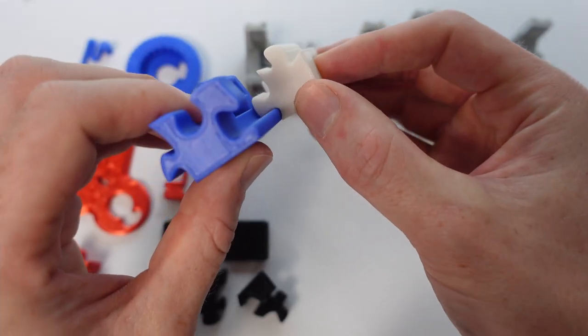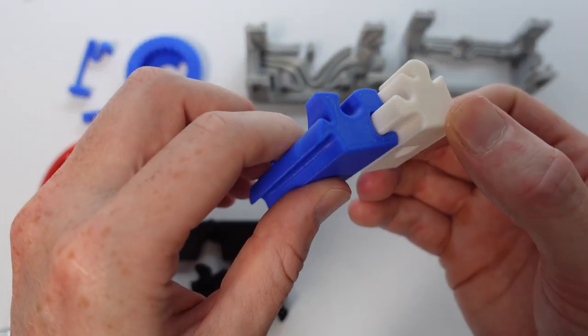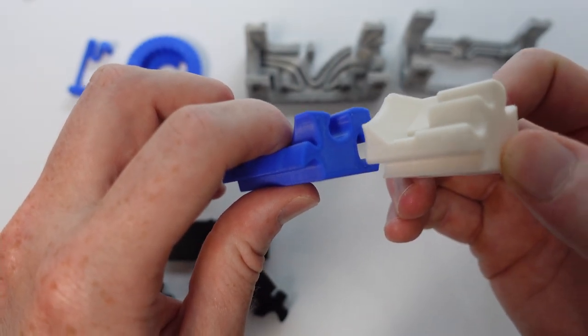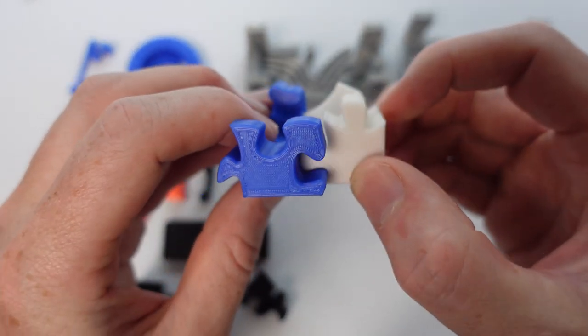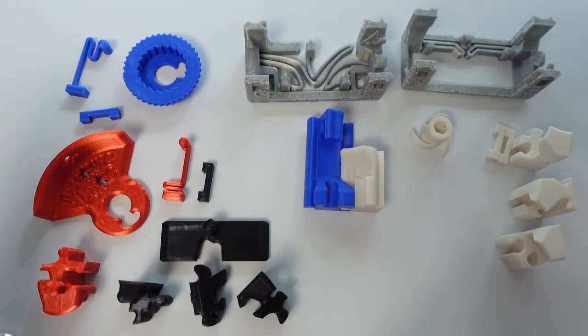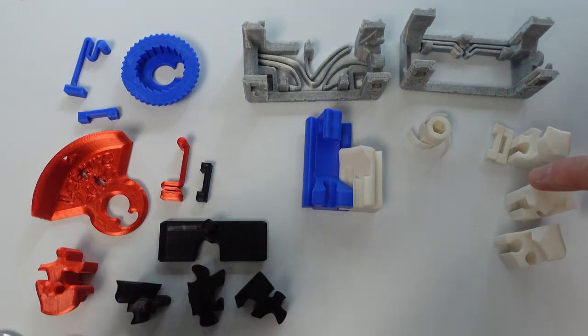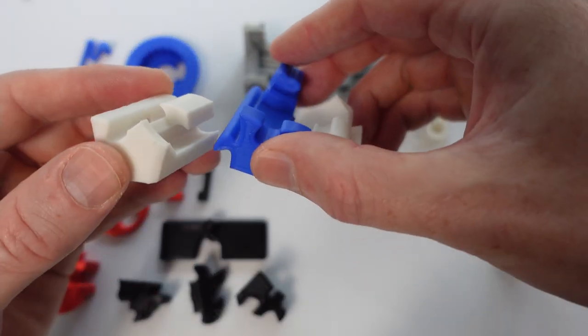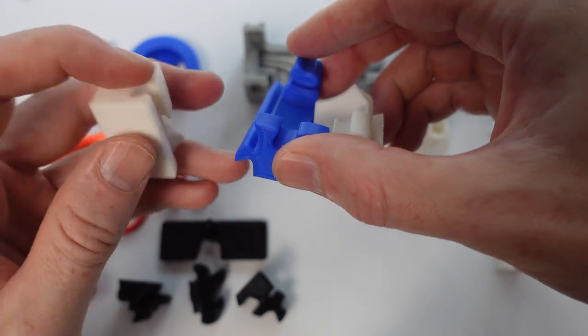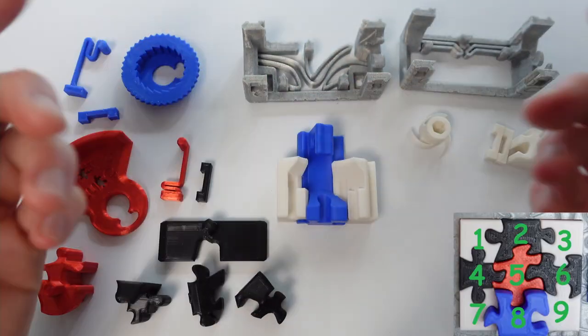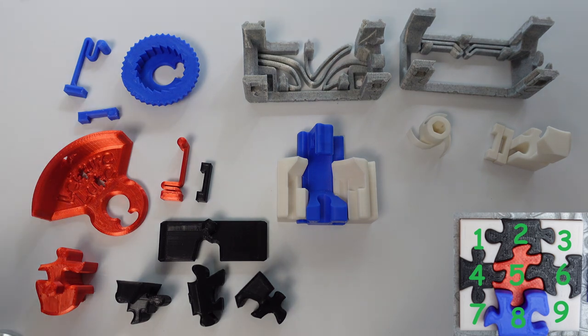When you're putting these pieces together, some will slide through from the back, others will slide through from the front. As you can see, this one won't slide through the front, so it has to be slid through the back.